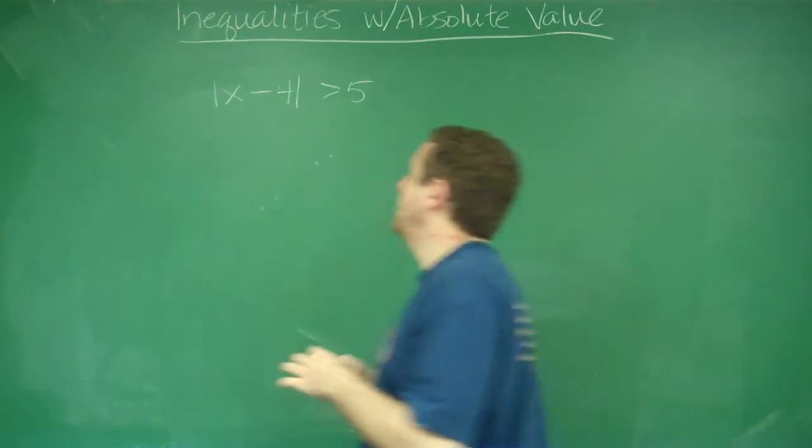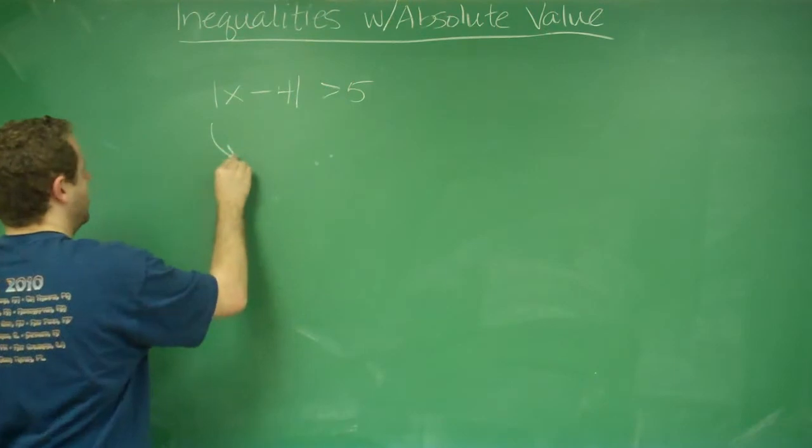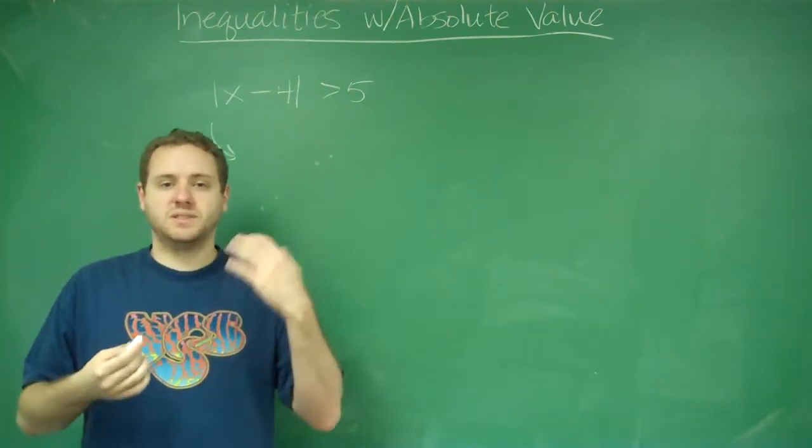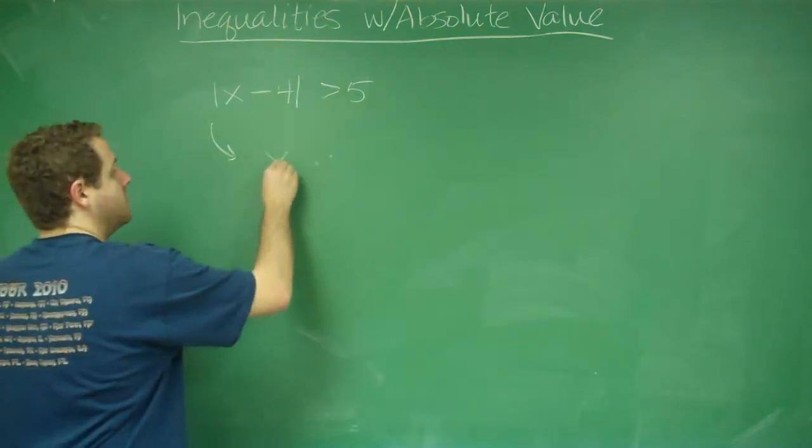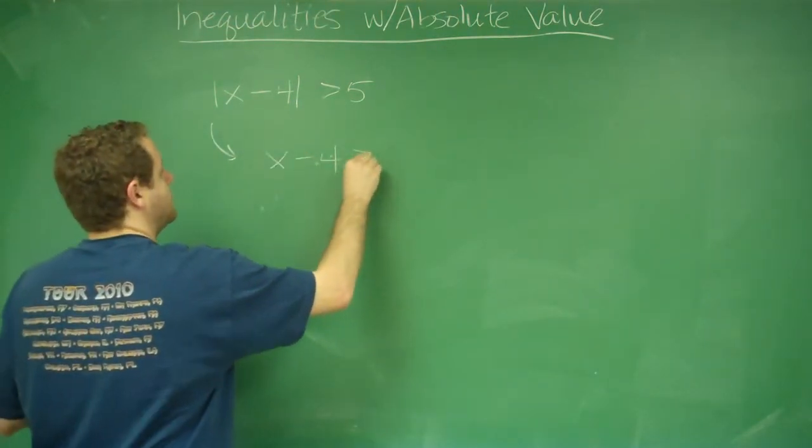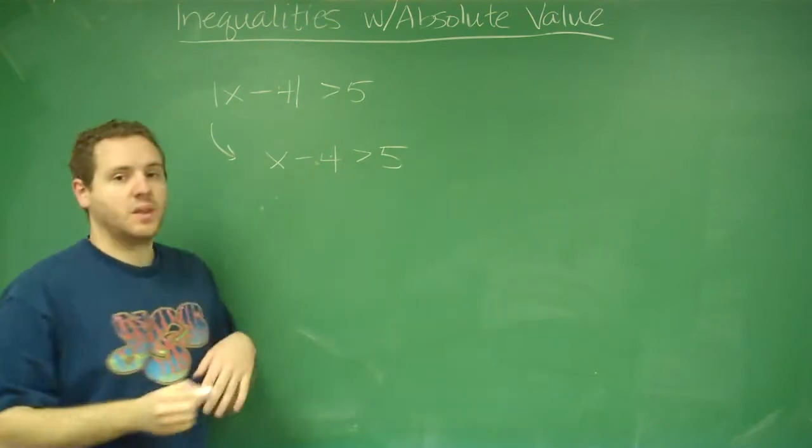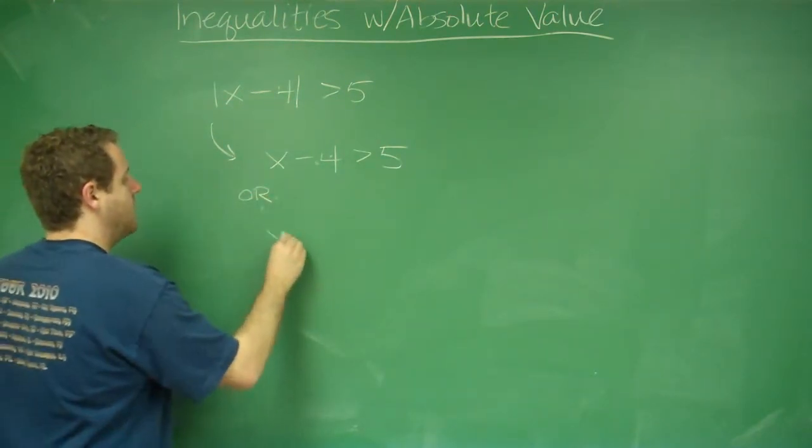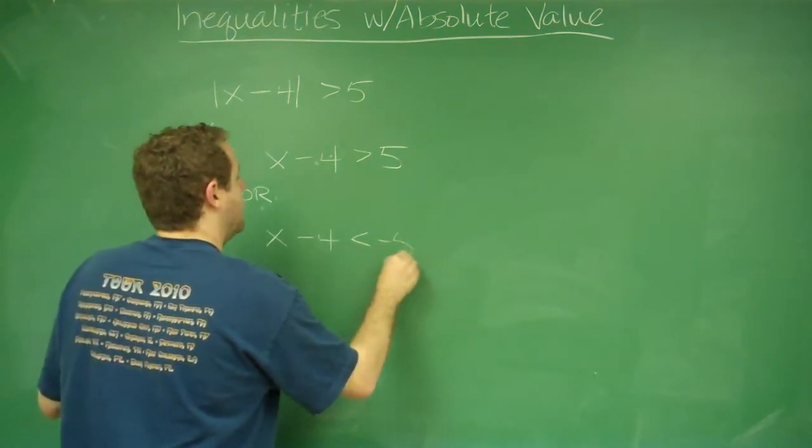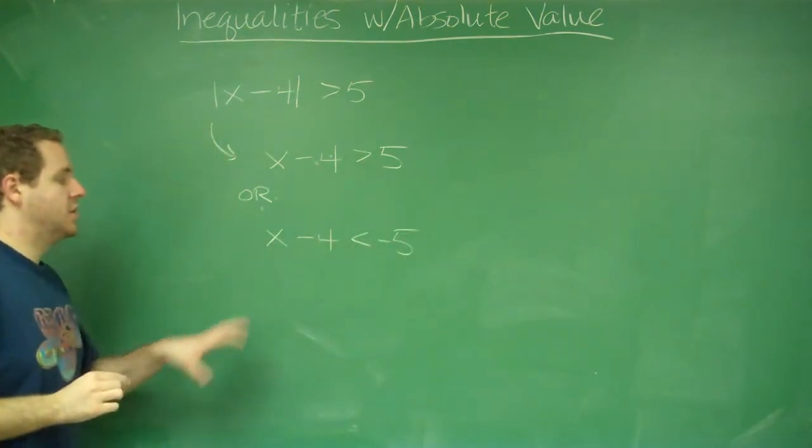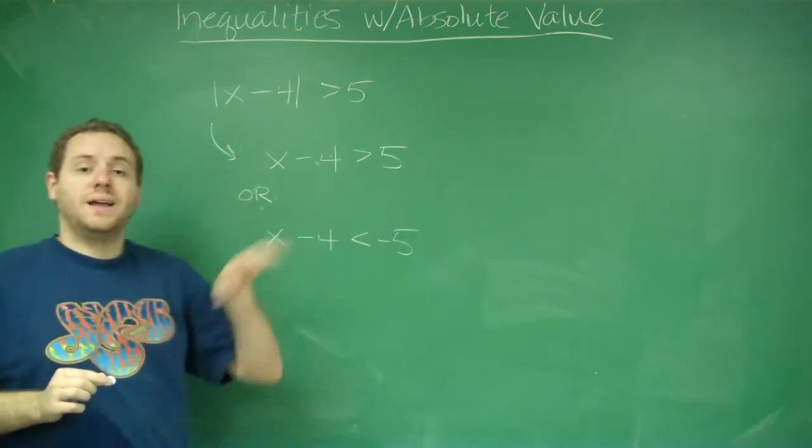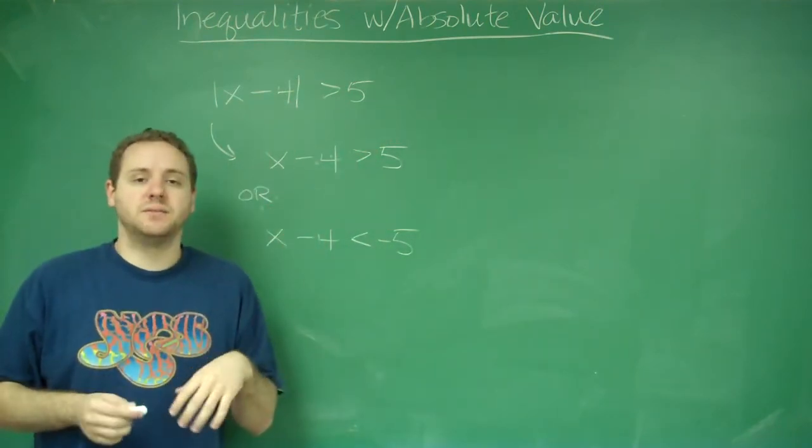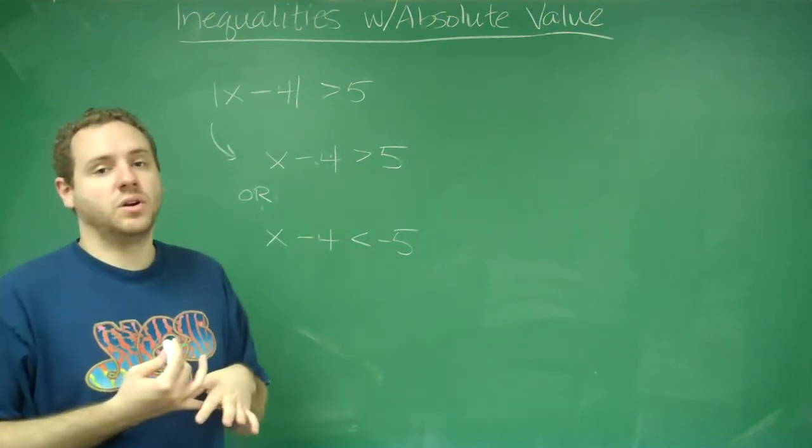So what we need to break this down into should seem pretty logical once you've gone through those examples that we just talked about. Either x minus 4 itself is just greater than 5, or x minus 4 is less than negative 5. So it could be a number that's more negative than negative 5, or it could be a number that's bigger, more positive than positive 5. And either of these things would work.